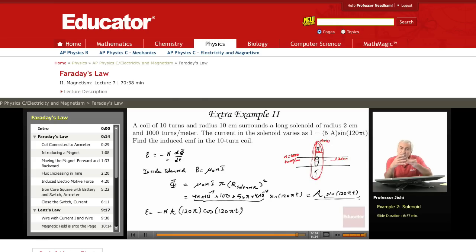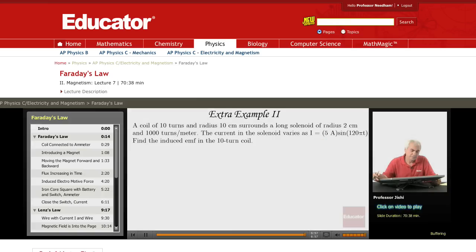But it's inside the solenoid. So the flux is not the magnetic field times the area of the coil, but it's the magnetic field times the area of a turn of the solenoid, because that's where B is non-zero.